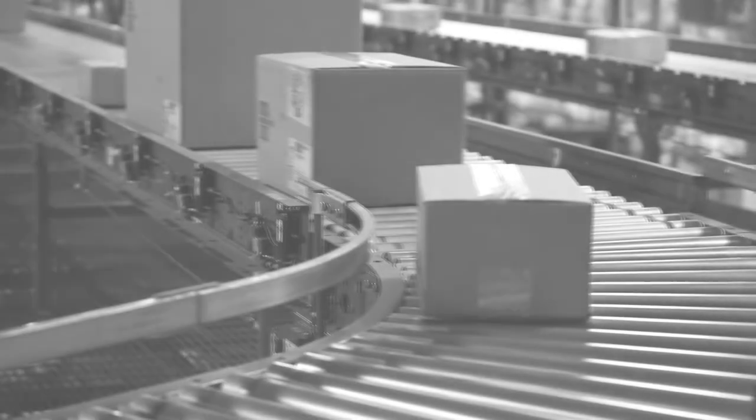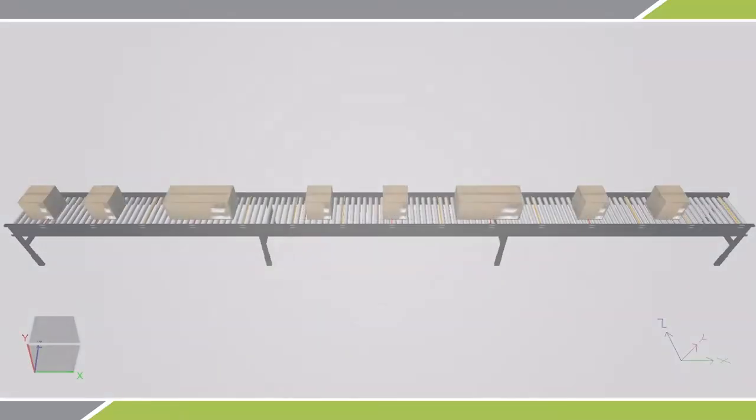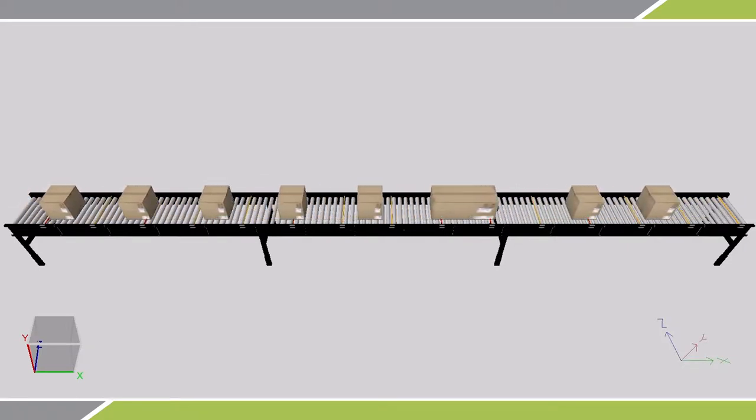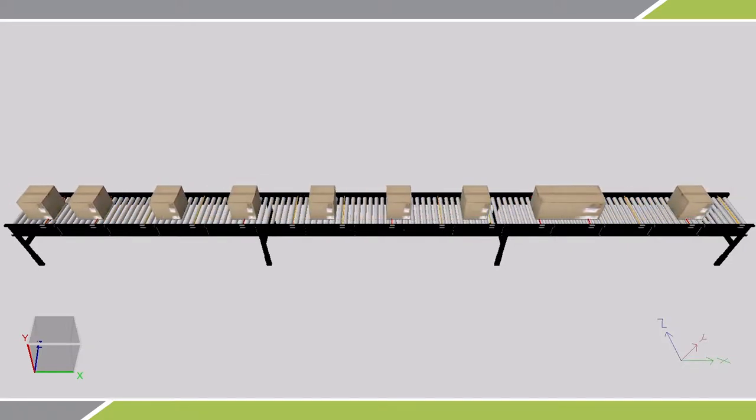In the design of MDR conveyors, zones are optimally sized to be just larger than the longest product. With a wide variation of product sizes being conveyed in today's distribution and production environments, this is not always feasible.